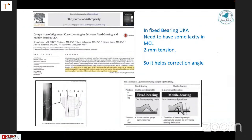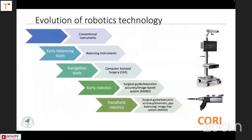The difference between mobile and fixed bearing: in a fixed bearing we need two millimeters of laxity across the joint. How do you confirm that two millimeters of laxity? We need some tool to tell us the two millimeters is achieved. This drove the evolution of technologies from conventional balancing instruments to CAS to handheld robots and now full robots.